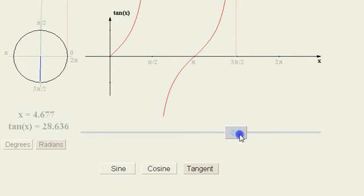It becomes infinitely steep, but when we get exactly to 3 pi over 2, let's see if I can get exactly to 3 pi over 2, that's hard. It's undefined.